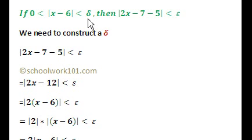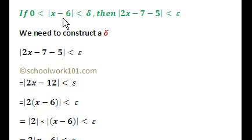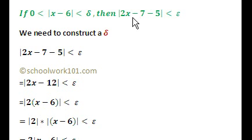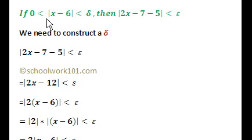This says the absolute value of x minus 6 is less than epsilon over 2, so our delta is epsilon over 2. Delta is some number and we're going to choose it to be epsilon over 2. If we put epsilon over 2 in, we can then work forward to show we can get the result — multiplying both sides by 2 and bringing the 2 inside. We worked backwards to find delta, and then we work forward to show that if the hypothesis is true, then the conclusion is true. That's the backwards method, and that's all you have to do.